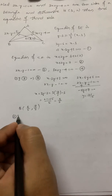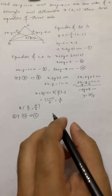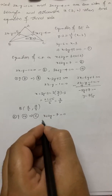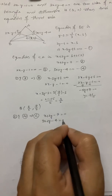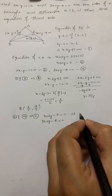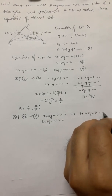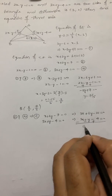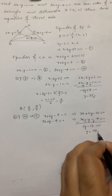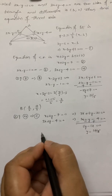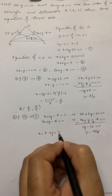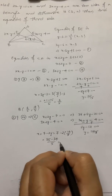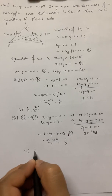Now solving lines 2 and 4 will give C. Lines 2 and 4 are: x plus 2y minus 7 equal to 0 and 3x plus y minus 4 equal to 0. Multiply the first by 3: 3x plus 6y minus 21 equal to 0, and subtract 3x plus y minus 4 equal to 0. This gives 5y minus 17 equal to 0, so y equals 17 by 5. Substituting: x equals 7 minus 2 times 17/5 equals 35 minus 34 over 5 equals 1 by 5. So C is (1/5, 17/5).